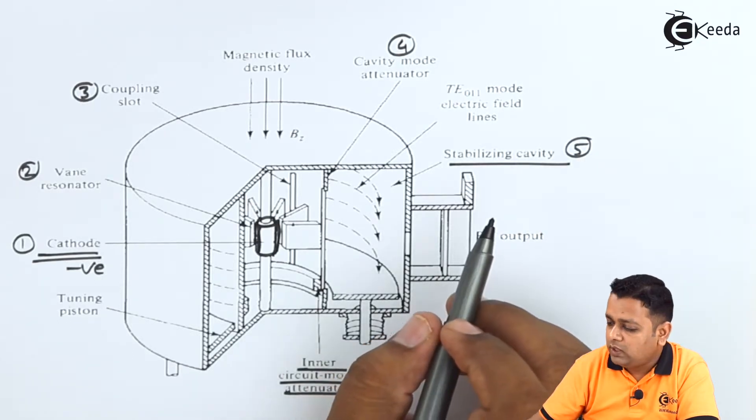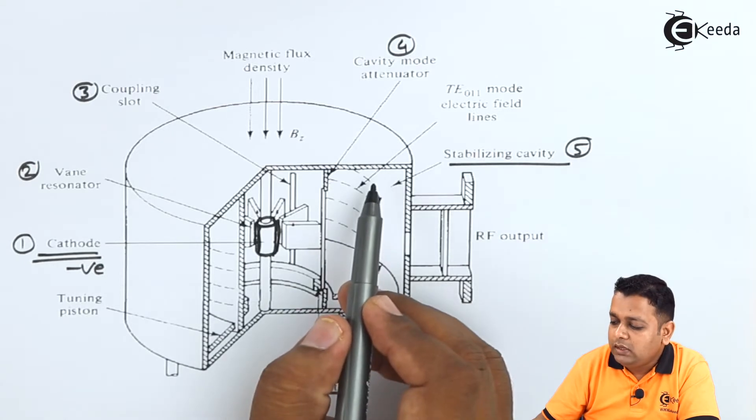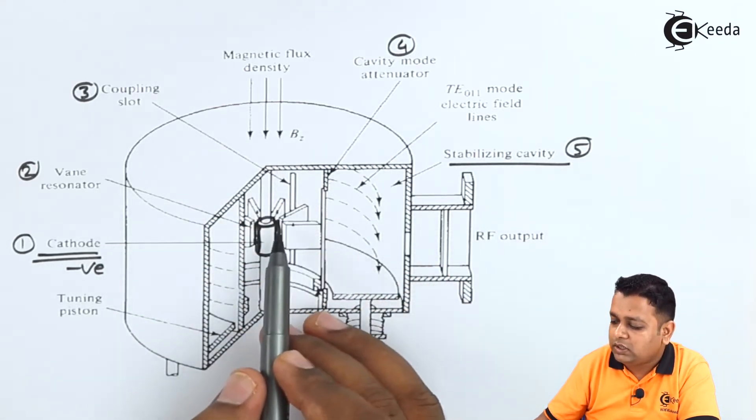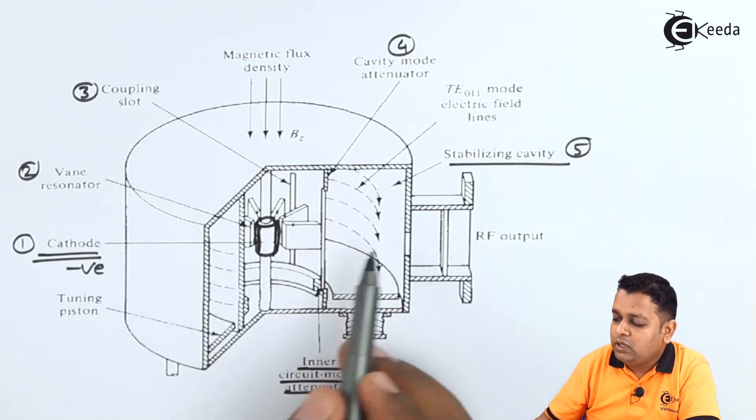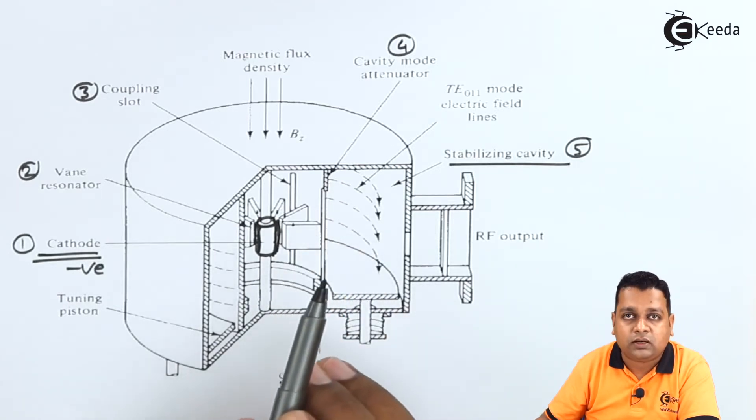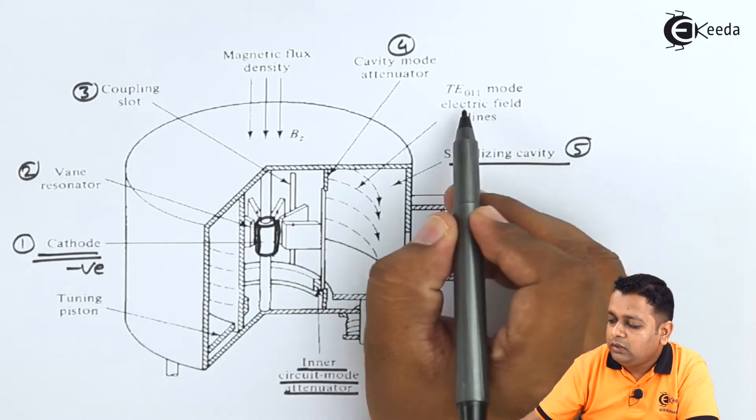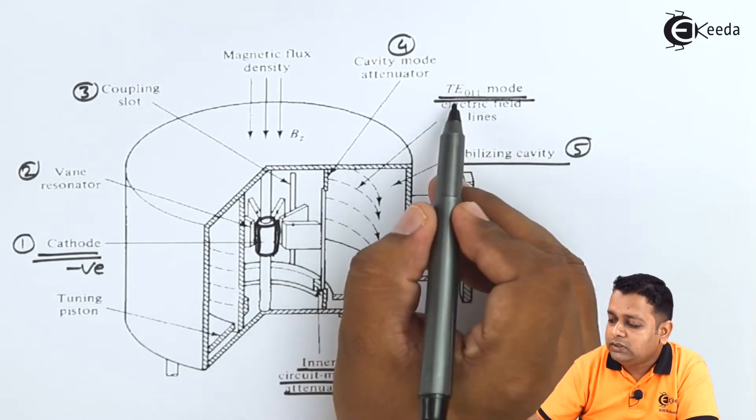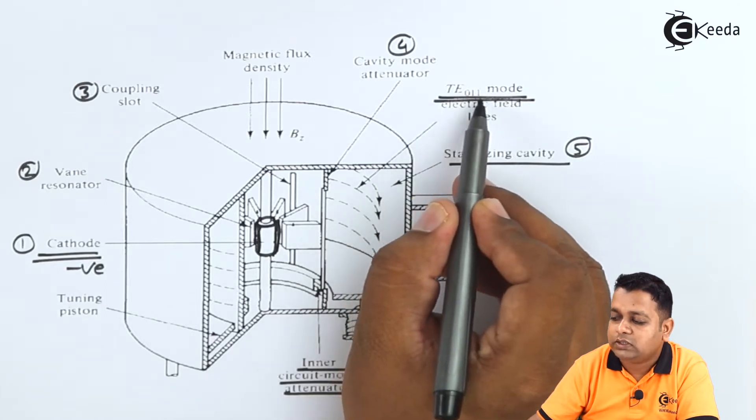Next to that we can see here inside the outer body of the anode and the resonator circuit, there are circulating electric field lines that are generated and the mode of propagation of that particular electric field is given as TE011.